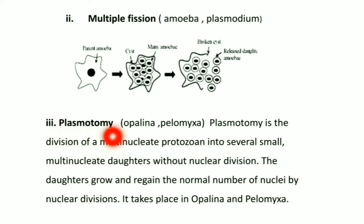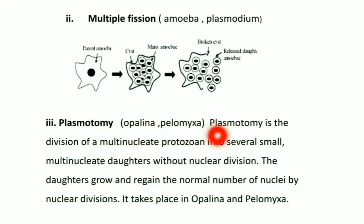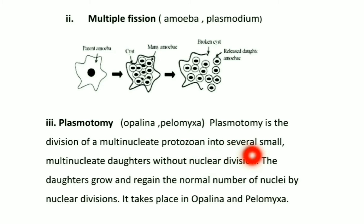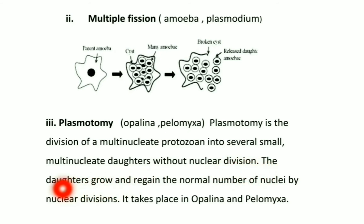Plasmotomy is a unique type of fission where first cytokinesis occurs and later karyokinesis occurs to restore the normal number of nuclei. Plasmotomy is the division of a multinucleate protozoan into several small multinucleate daughters without nuclear division. The multinucleate protozoan divides, and the daughter cells are also multinucleate. Some nuclei go to one daughter cell and some to the other. Afterwards, nuclear division occurs in the daughter cells and the normal nuclear number is regained.